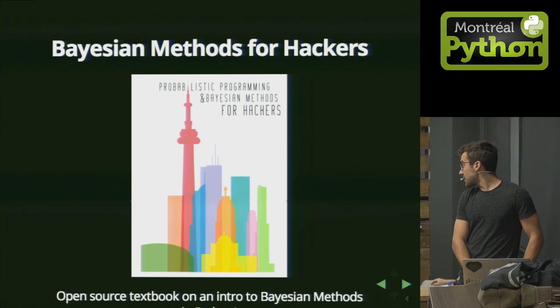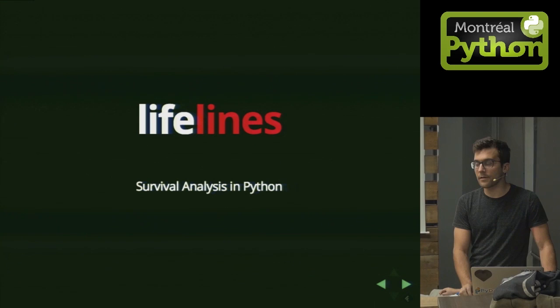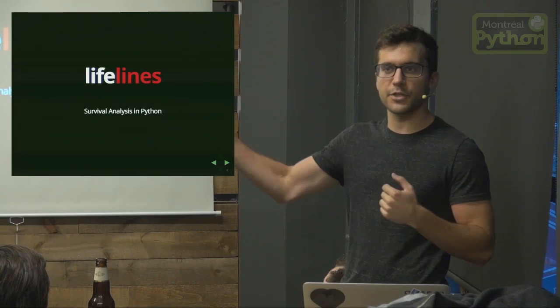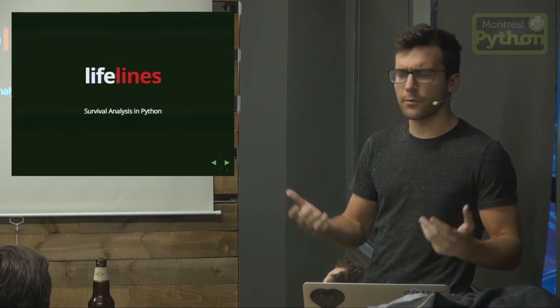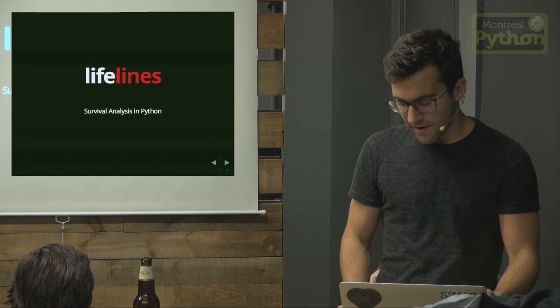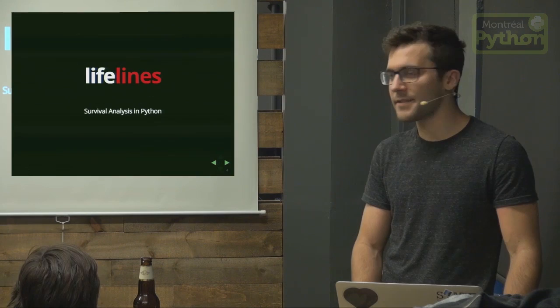The project I want to talk about tonight is Lifelines, which is survival analysis in Python. Survival analysis is one of those tools that didn't quite migrate to the more mainstream machine learning field. You have topics like linear regression and logistic regression that were primarily stats topics and migrated into machine learning, but survival analysis unfortunately didn't — it's sort of the leftover kid inside stats that wasn't brought over.